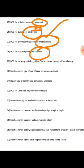Drug of choice for early mycosis fungoides is electron beam therapy. Most common type of pemphigus is pemphigus vulgaris; rarest type is pemphigus vegetans. Drug of choice for dermatitis herpetiformis is dapsone. Most common joint involved in psoriatic arthritis is DIP. Most common cause of non-bullous impetigo is Strep; bullous impetigo is Staph.